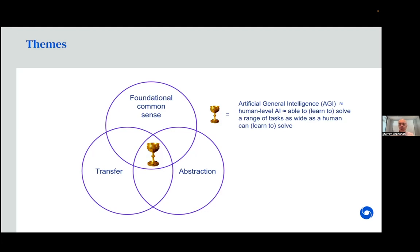I'm interested in producing what we now tend to call artificial general intelligence, which is a kind of holy grail of AI — that's the thing in the middle of the Venn diagram. My view is that the way to get there is to make some kind of breakthroughs in the context of these three themes. What I mean by AGI is roughly human-level AI: the ability to learn to solve a range of tasks as wide as a human being can learn to solve.